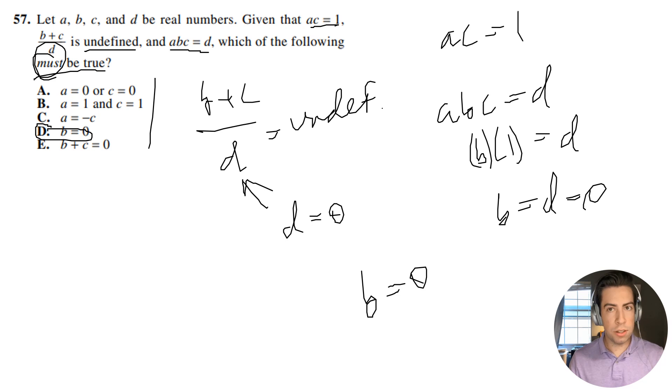Now another way that we can make sure this is correct is let's look at the other answer choices. So if A times C equals 1, then C is not equal to 0, right? And if C is not equal to 0 and B is equal to 0, this can't be true.